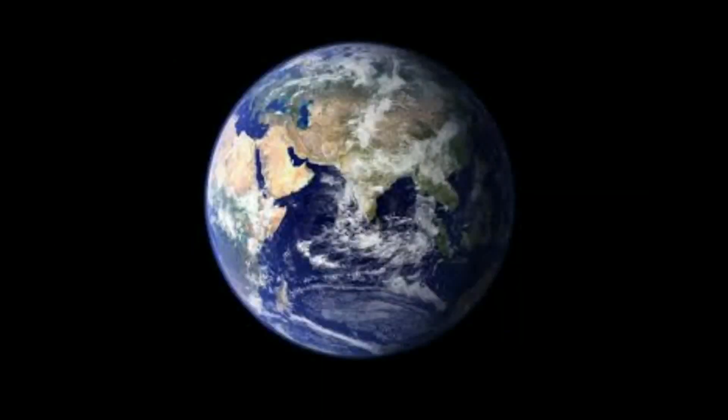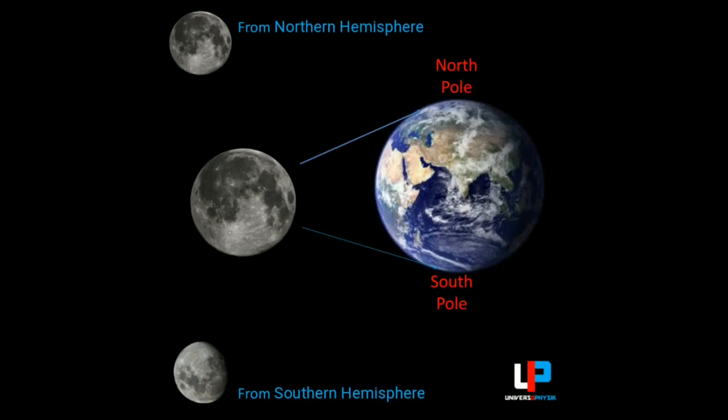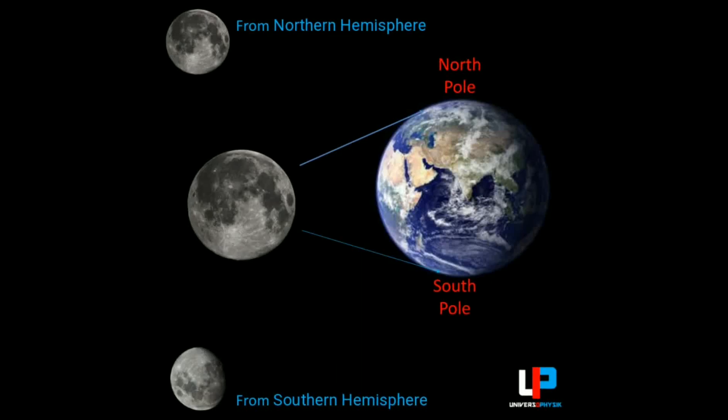The reason is that we live on a spherical planet. Whether you believe or not, it is the fact. So, if one person from the north pole sees the moon, he will see that the moon's dark spots are on the upper side. But if another person on the south pole sees the moon, he will see that the moon's dark spots are on the lower side.